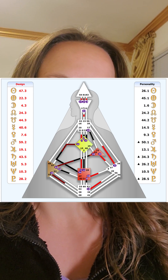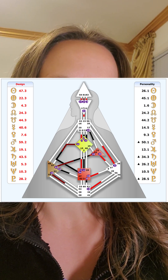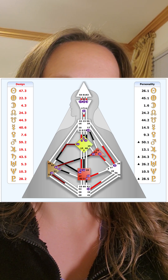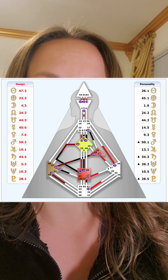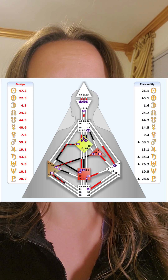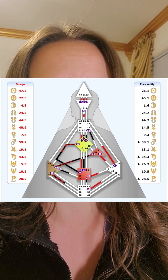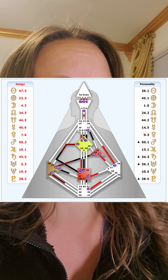A key component of human design is the body graph. The central tool in human design is the body graph, which is a chart created using your birth data. It represents your unique energy blueprint, showing how energy flows through you and how you're wired.